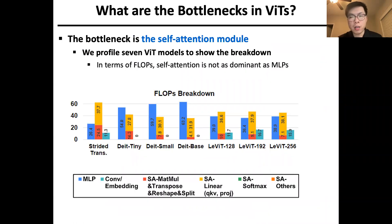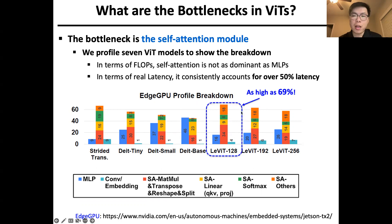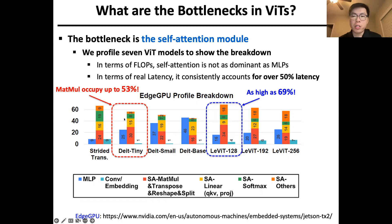So what are the bottlenecks in VITs? To answer that, we profile 7 VIT models to show the breakdown. As shown in the figures below, for each model, the left bar denotes the MLPs, the middle bar denotes the self-attention, and the red bar represents other embedding functions. We see that in terms of FLOPs, self-attention is not as dominant as MLPs. But in terms of real latency, self-attention consistently accounts for over 50% latency. Profiled on the Edge GPU Nvidia Jetson TX2 device, self-attention occupies as high as 69% when running LEVIT-128. Within self-attention, matrix multiplication between Q and K, attention and V, occupies up to 53% latency.